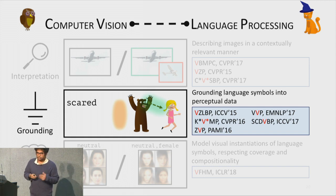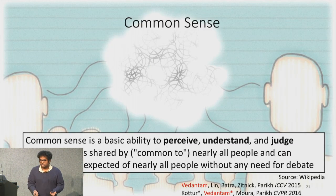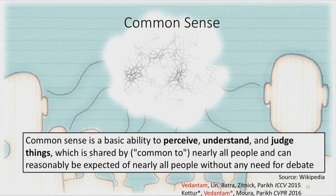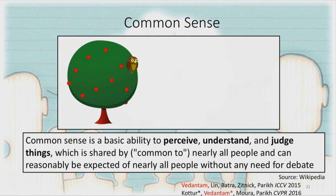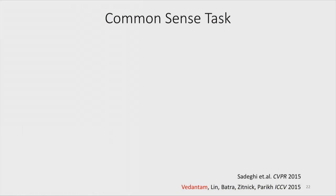In the first part of the talk we discussed how a speaker modifies utterances based on beliefs about a listener. Now let's look at grounding — what words mean not to an external listener but in the context of the world itself. We look at learning common sense, which is the basic ability to perceive, understand, or judge things shared by nearly all people. For instance, you wouldn't be surprised by an owl in a tree, but an aircraft sitting inside a tree would seem implausible.